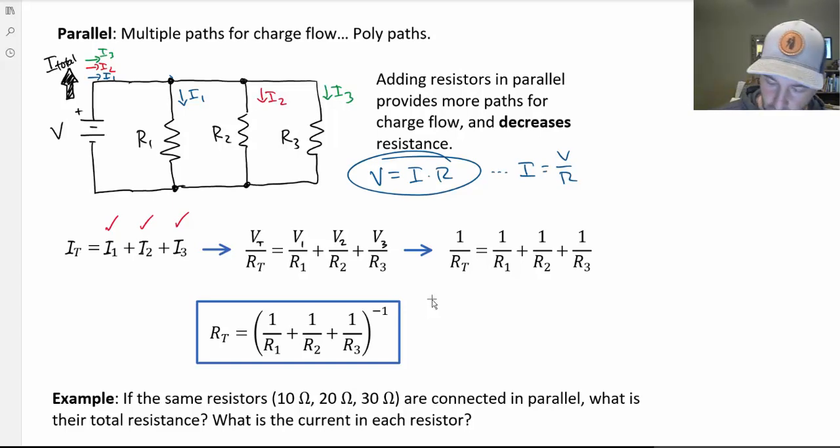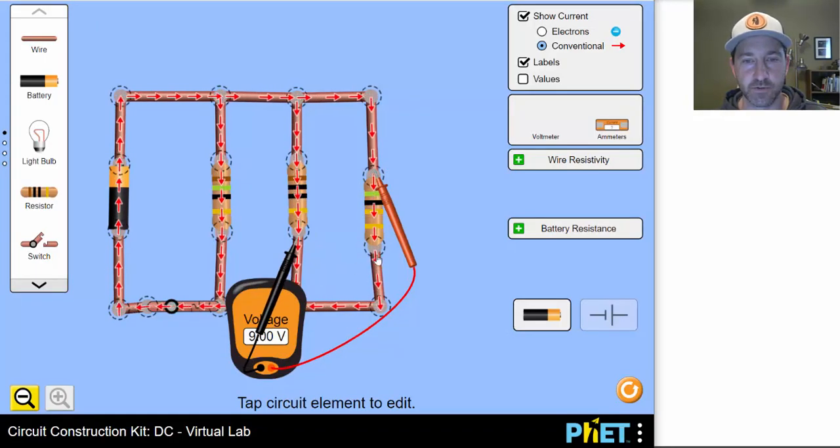I1 is equal to V over R for each of those currents. So I1 would be V1 over R1, I2 would be V2 over R2, et cetera. You can see we can make that substitution. The total current would be V total over R total. Now the catch is that the voltage is the same everywhere. As we saw in our simulation, it doesn't matter which resistor we hooked up to, it was always 9 volts.